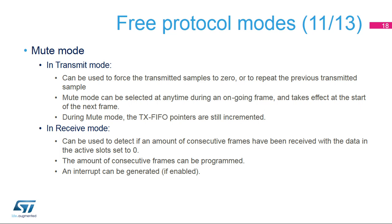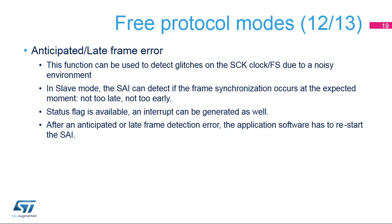The SAI also provides a mute function. In transmit mode, the user can choose to send zeros on muted slots or the previous transmitted value. The previous transmitted value is limited to configurations having one or two slots per frame. Note that in transmit mode, the TX FIFO pointer is still incremented, meaning that the data present in the FIFO for which mute mode is requested is discarded. The receive mute mode can be helpful to detect an amount of consecutive slots having all data reset to zero. The anticipated or late frame error detection function increases the interface's reliability by detecting unexpected frame synchronization misalignment. A status flag is set and an interrupt can be generated. The application software will then have to restart the SAI interface.